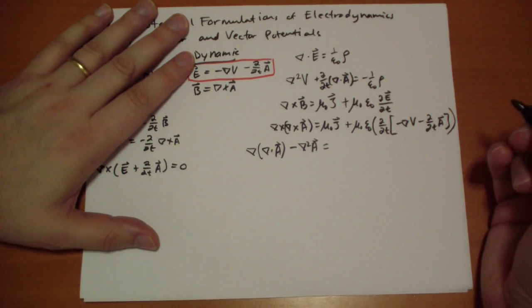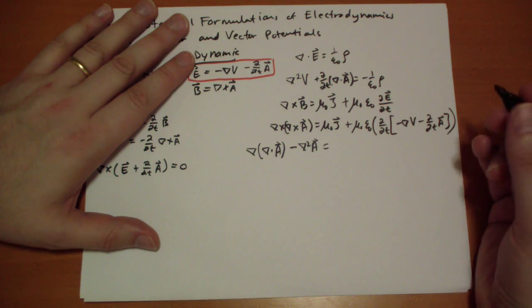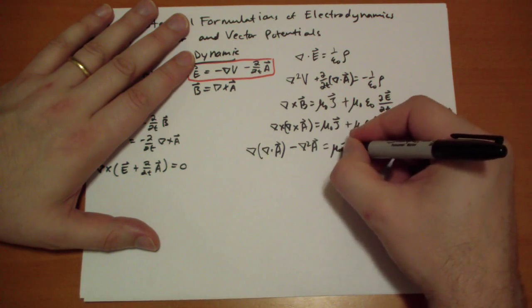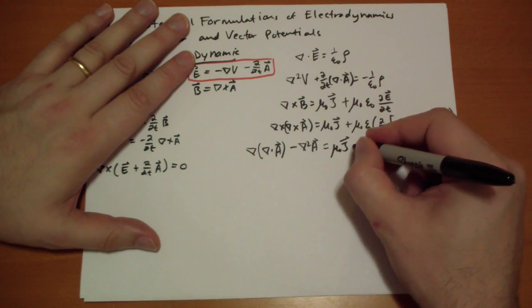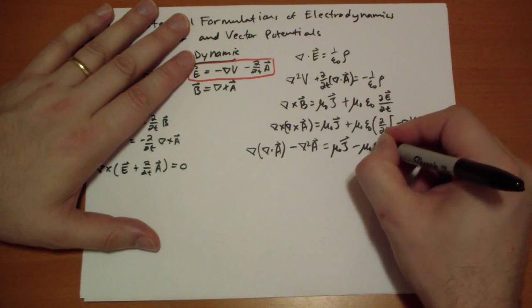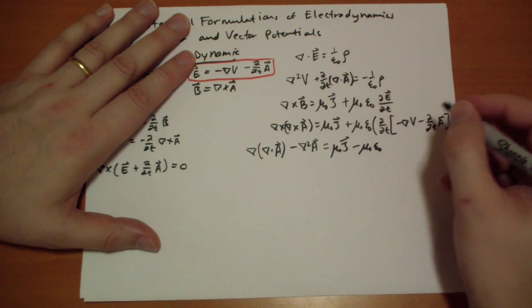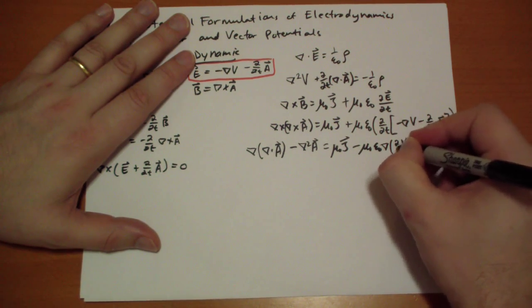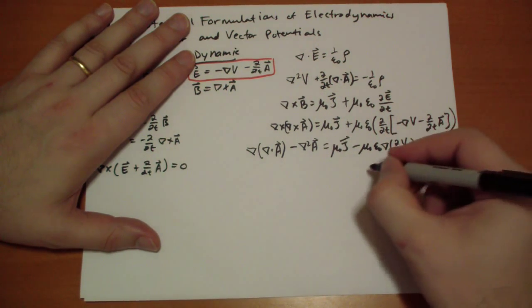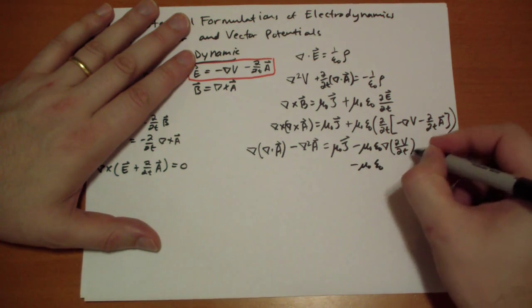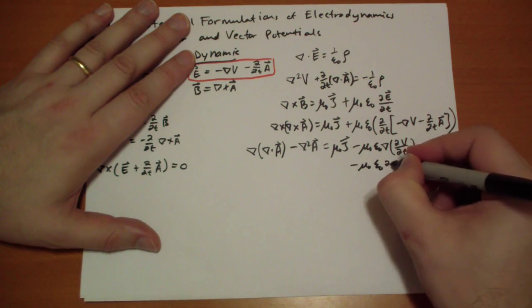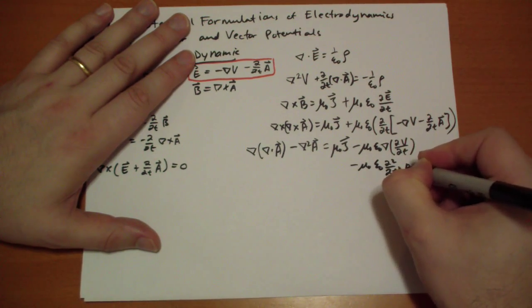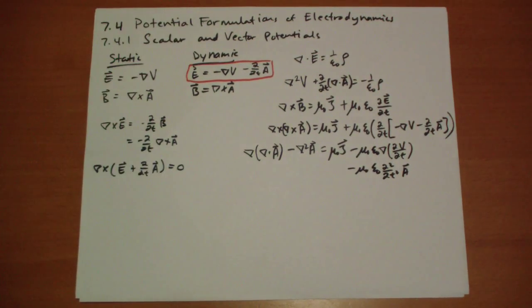And that's going to equal mu-naught, minus mu-naught epsilon-naught, the gradient of the time derivative of V, minus mu-naught epsilon-naught, the second time derivative of A vector, the acceleration of the A, really.